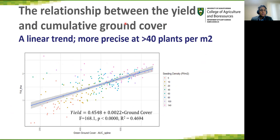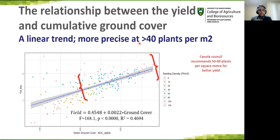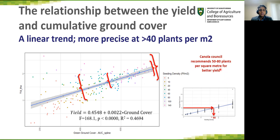This slide shows the relationship between yield and cumulative ground cover. The linear fit can attribute 46% of the variation in our data. Estimates are more precise at 40 plants per square meter. However, the Canola Council recommends 50 to 80 plants per square meter for better yield. Based on that recommendation, the seeding rate of 80 plants per square meter and above is the target region, and it appears very stable based on low variability.